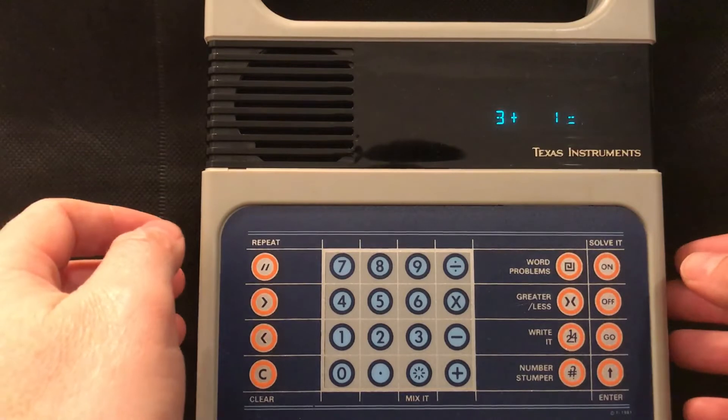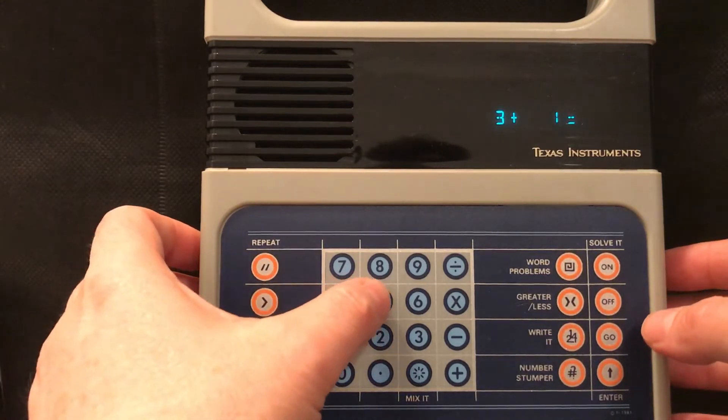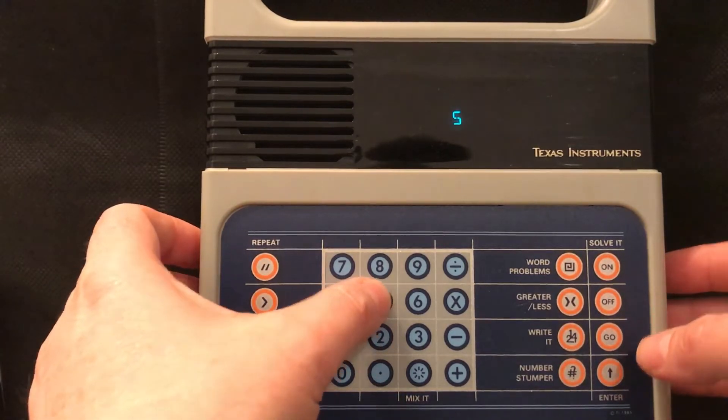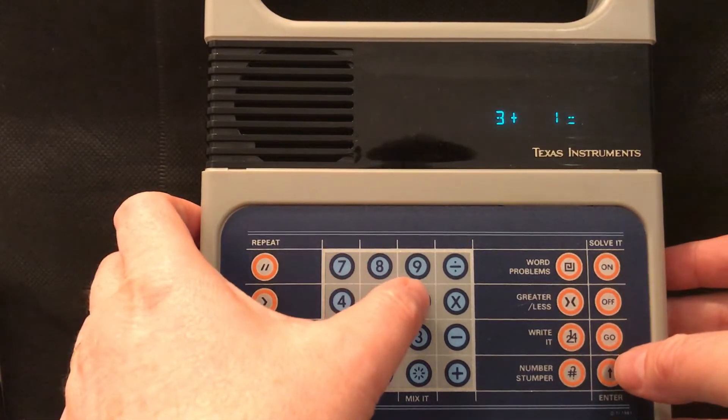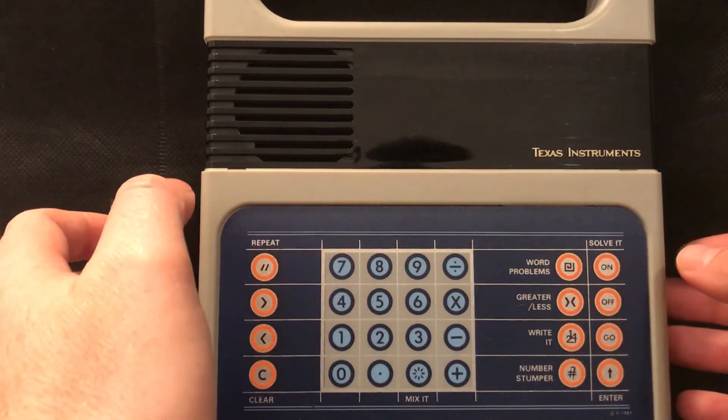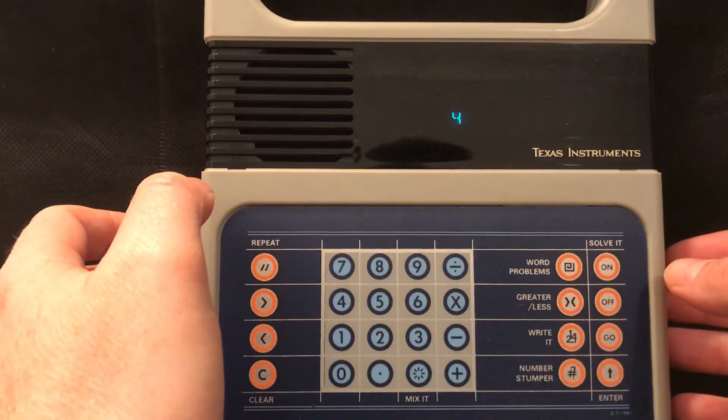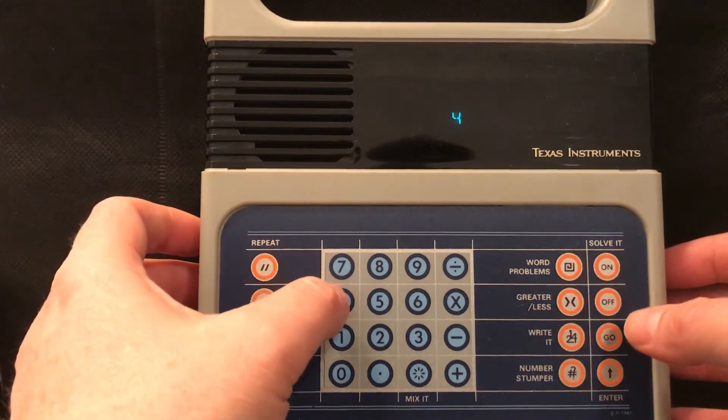Three plus one is what? And let's try and get this answer wrong twice. So we say five which is wrong. Wrong. Try again. Three plus one is what? Try six. That's incorrect. The correct answer is four. So it tells you the right answer.